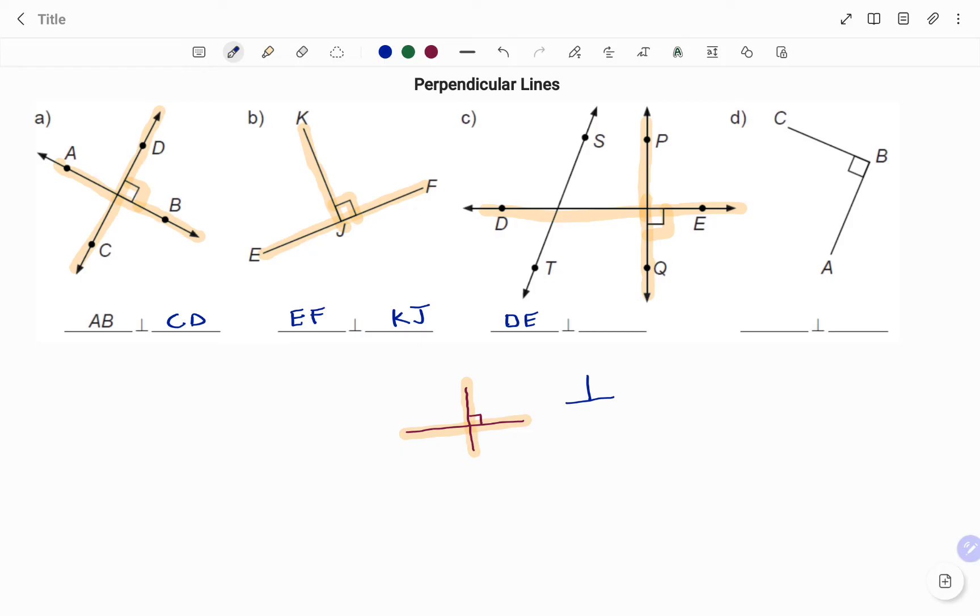And in my last example, I have the line CB intersecting with the line AE at an angle equal to 90 degrees, so I have AE perpendicular to CB. Thanks for watching, bye!